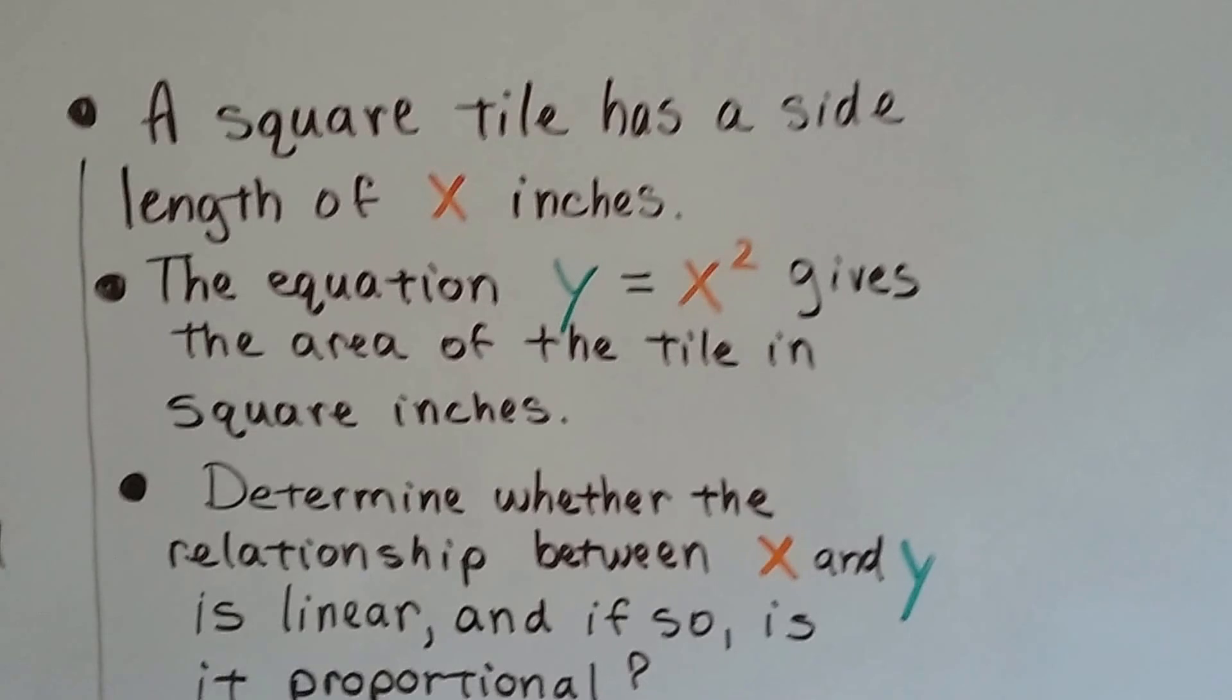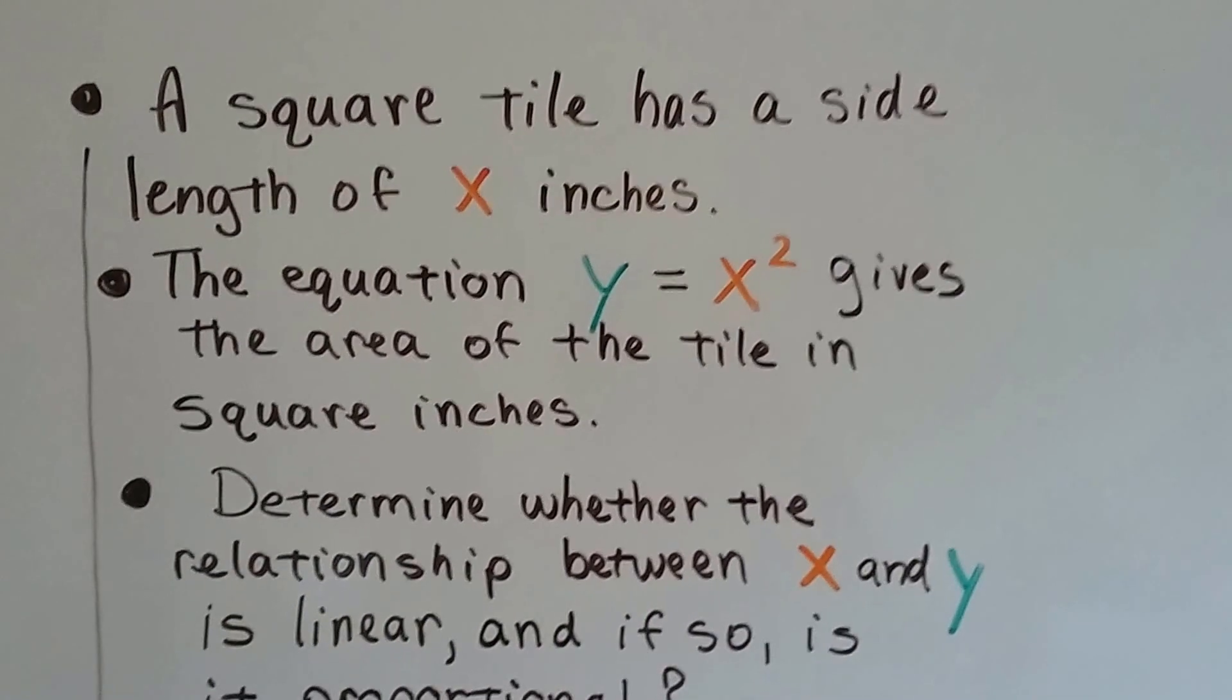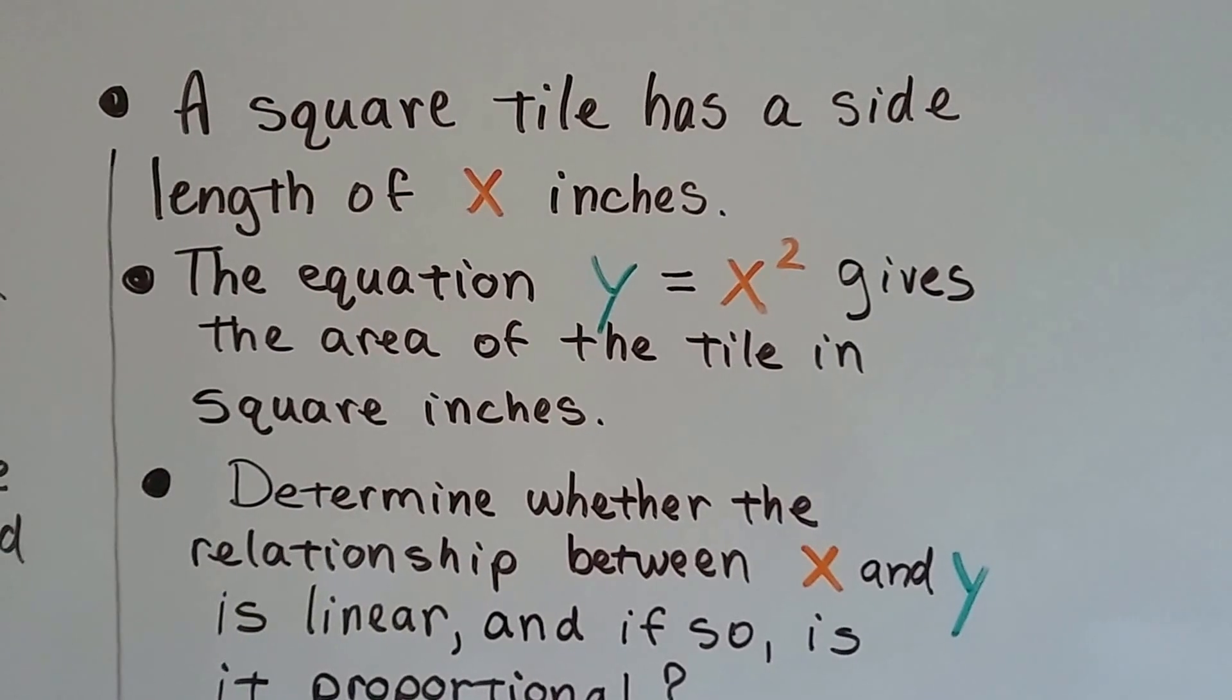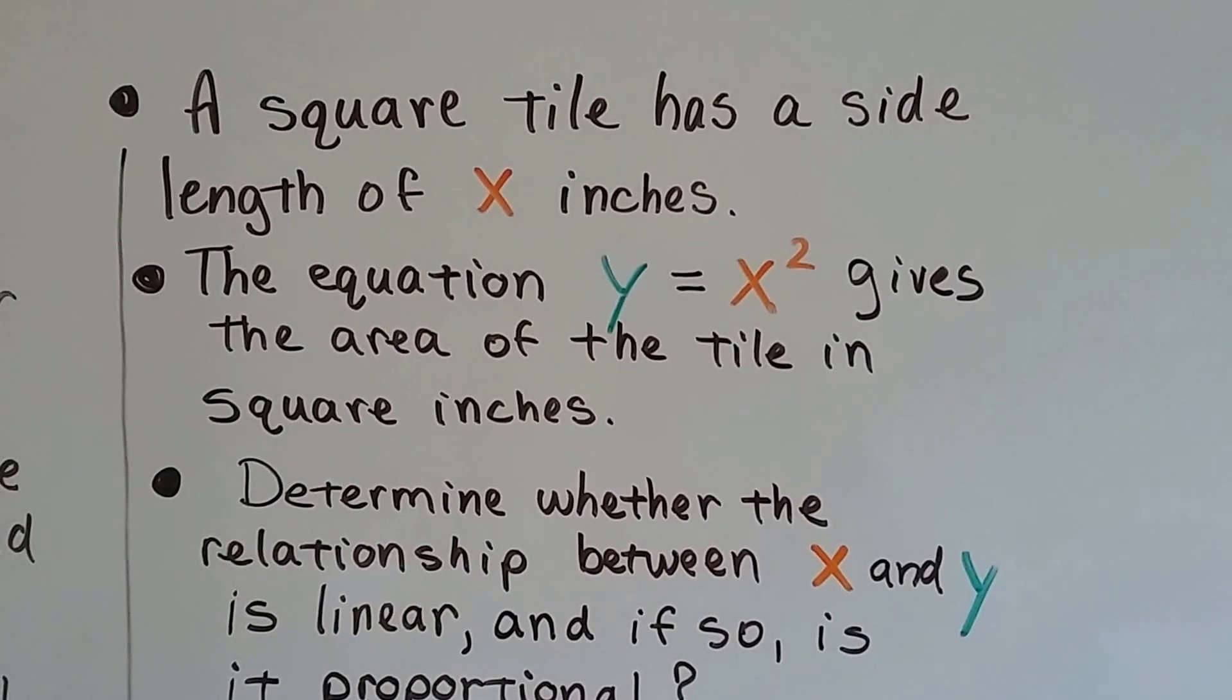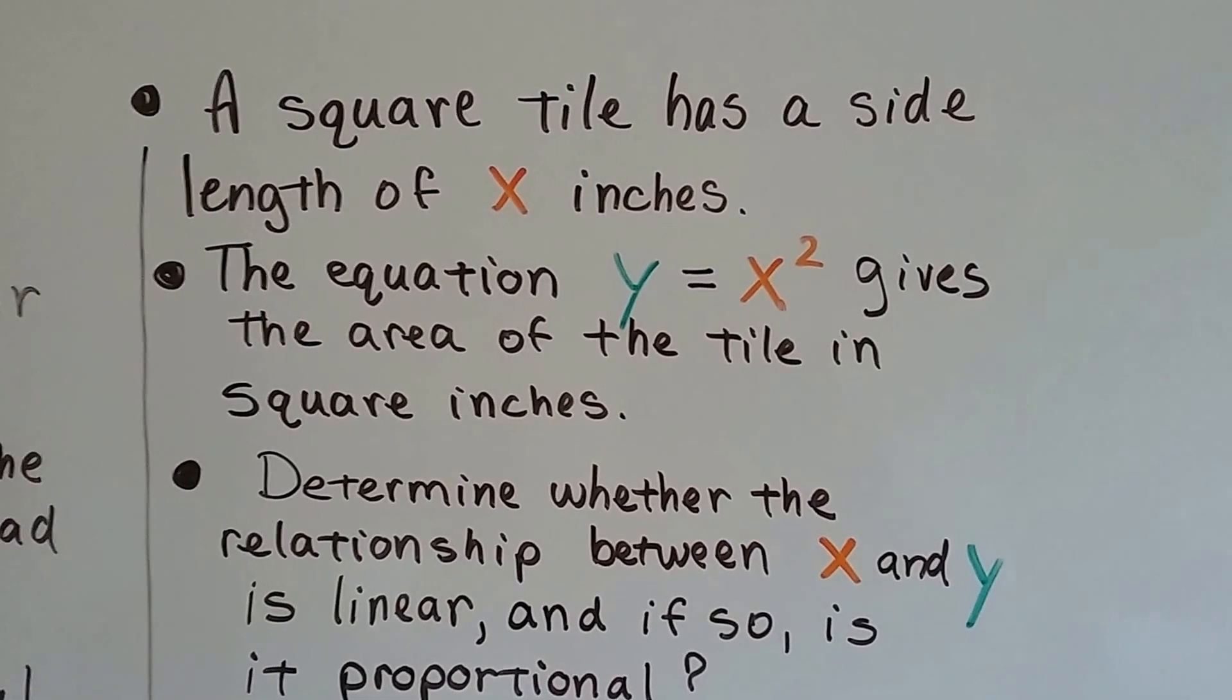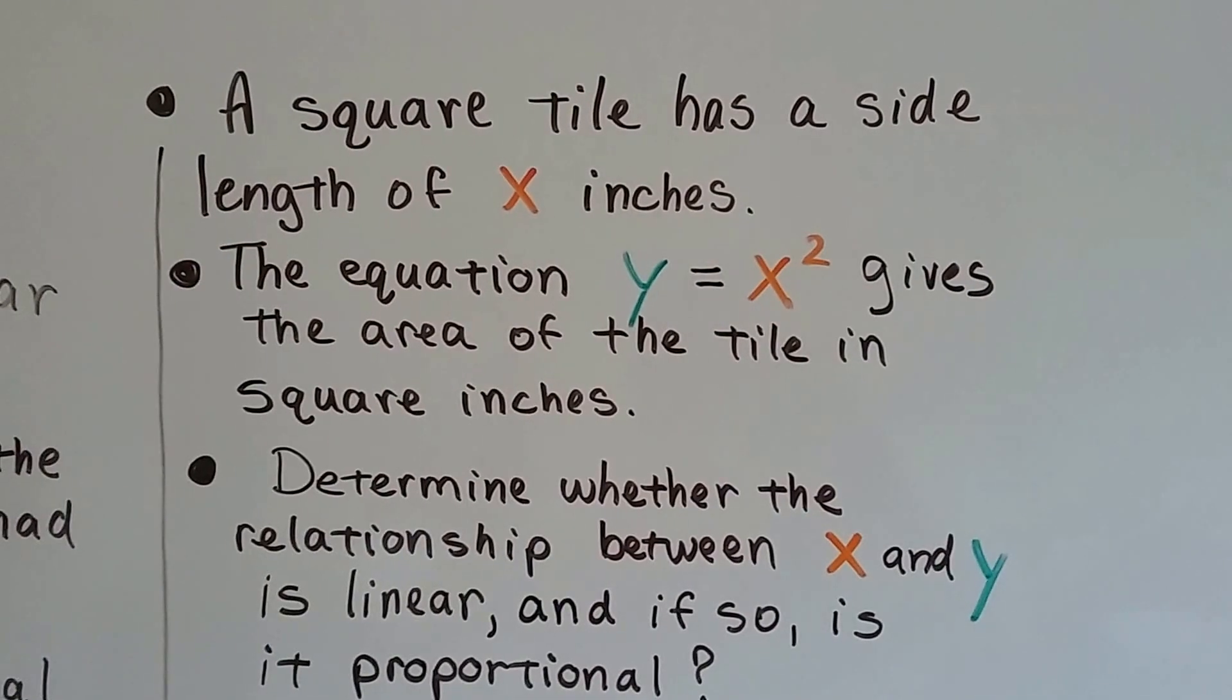A square tile has a side length of x inches. The equation y equals x squared gives the area of the tile in square inches. So if it was 10 inches on one length,